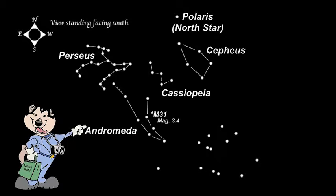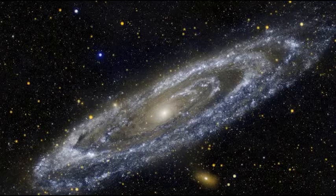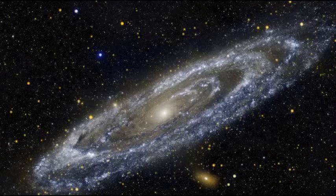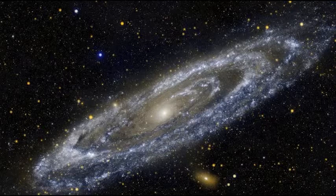M31 is a spiral galaxy, just like the Milky Way. It is about 2.5 million light-years away. At a magnitude of 3.4, it is easy to find with your naked eye.